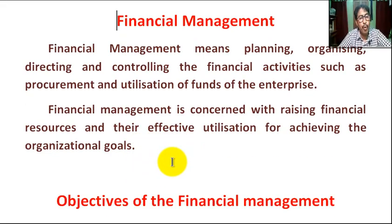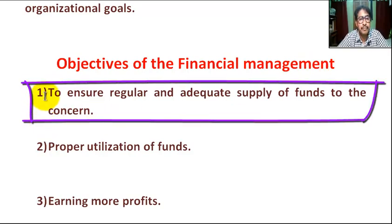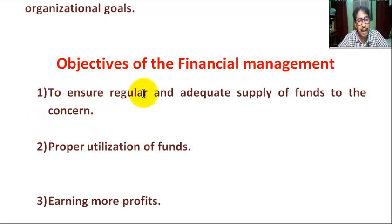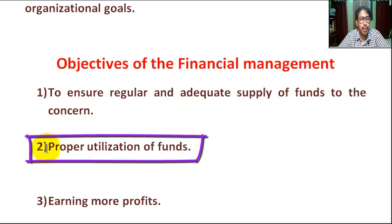Now, what are the objectives of financial management? Number one: to ensure regular and adequate — meaning sufficient — supply of fund to the concerned. Number two: proper utilization of fund.